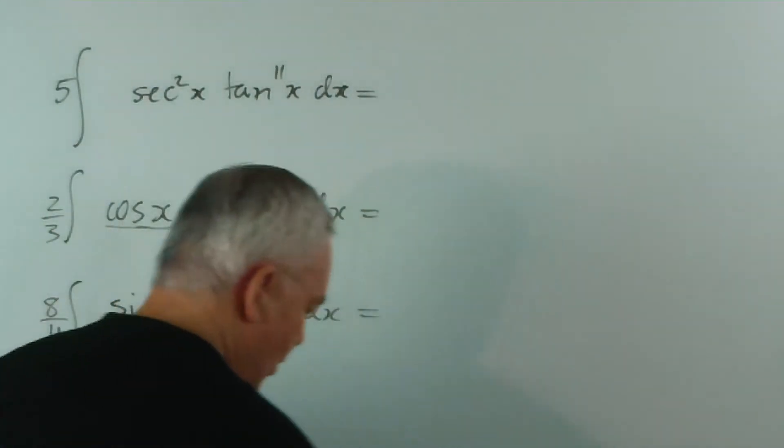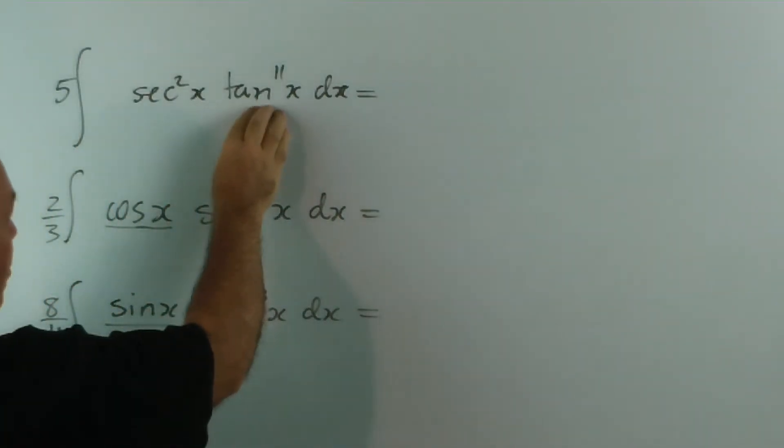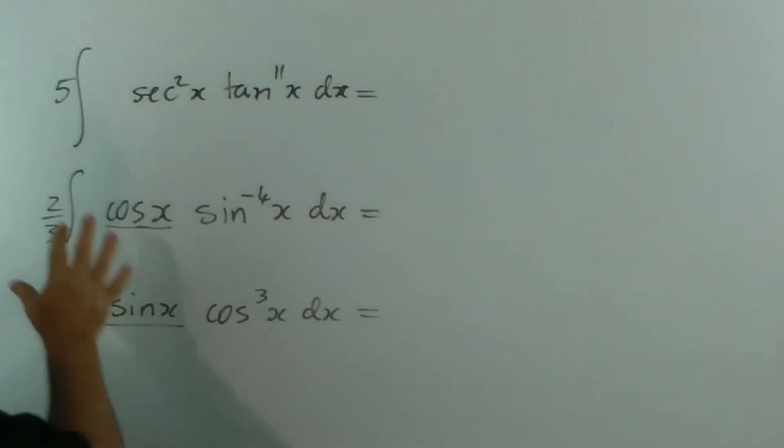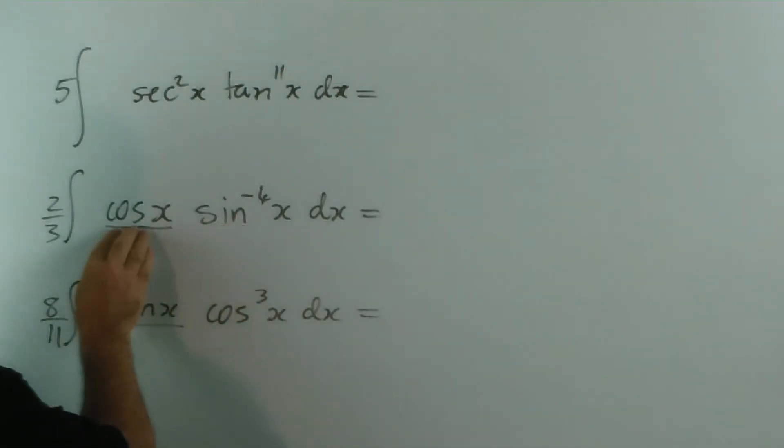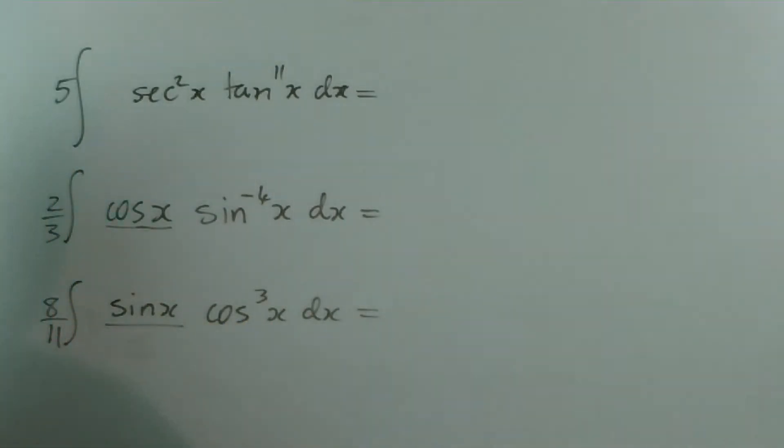The second step is to make sure that the derivative of tan x is exactly sec squared x, which in this case it is. There is no adjustment necessary. The derivative of sine x is cos x. No adjustment necessary. The derivative of cos x is minus sine x, so we actually need a minus sine here, or a minus 1 if you like.